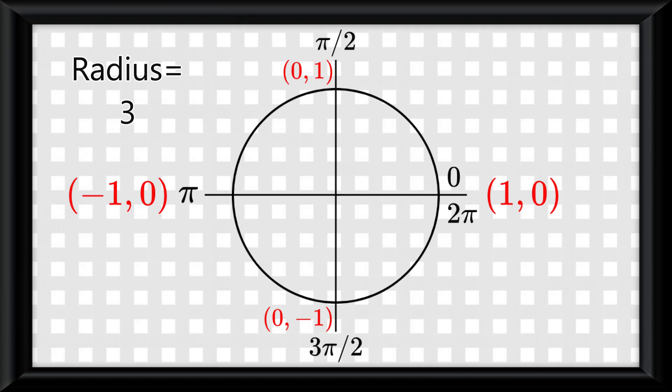Of course, if the radius was something else like 3, you would just simply change the quadrantal coordinate points to be 3 instead of 1.